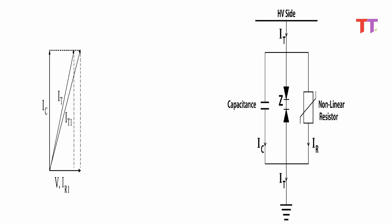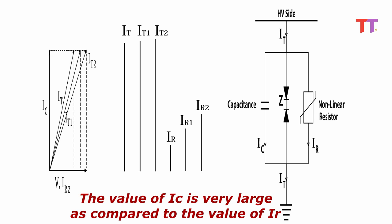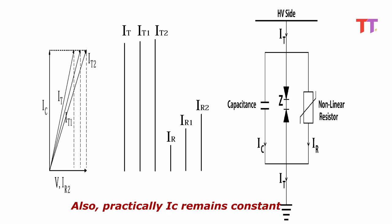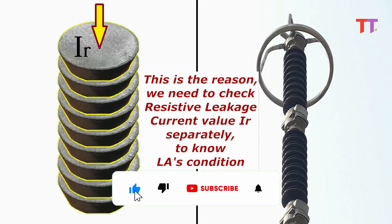Similarly, if resistive leakage current IR1 again increases to a new value IR2 due to the reasons mentioned earlier, the new increased total leakage current will be IT2. If we plot these different values of IR and IT separately, we notice a very important point: even if there is a significant increase in resistive leakage current IR, the respective increase in the resultant leakage current IT is very small. This happens because the value of IC is very large compared to IR and practically IC remains constant. Hence, even large changes in IR do not affect much the value of IT. This is the reason we need to check resistive leakage current value IR separately to know LA's condition.